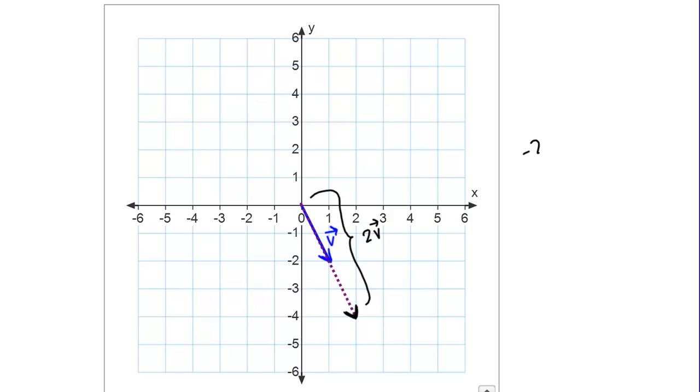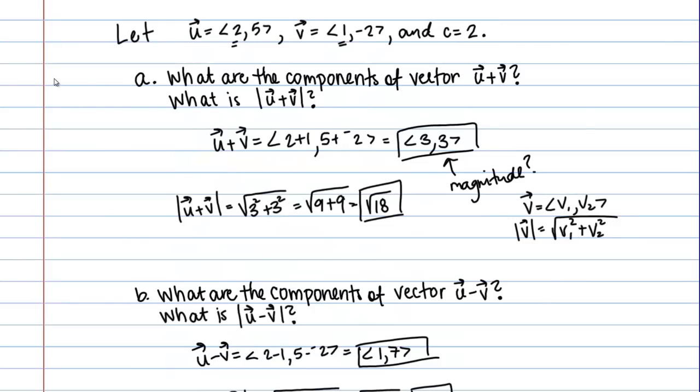Now, if instead we had perhaps calculated negative 2V, then that would look like this. I would just point in the opposite direction since our scalar multiple is negative. This should give you a sense of how to do basic operations with vectors using components.